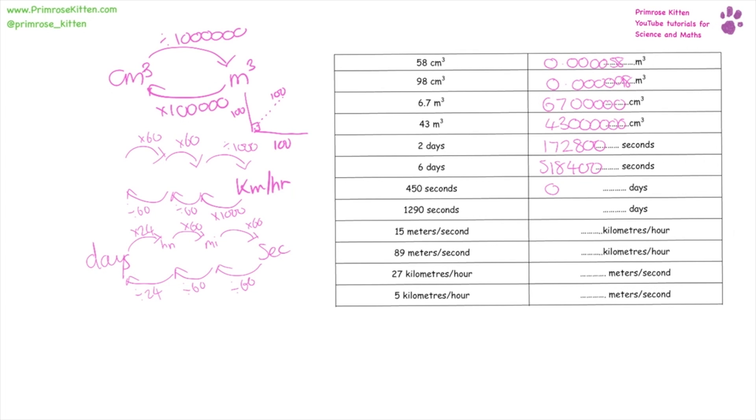450 seconds is 0.0052 days, and 1,290 seconds is 0.015 days. 15 meters per second is 54 kilometers per hour. 89 meters per second is 320.4 kilometers per hour. 27 kilometers per hour is 1.4 meters per second. No, it's not. 5 kilometers per hour is 1.4 meters per second. 27 kilometers per hour is 7.5 meters per second.